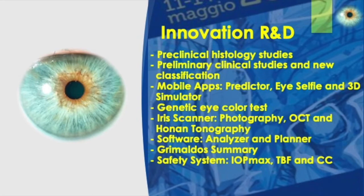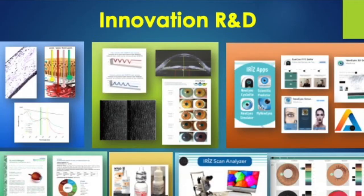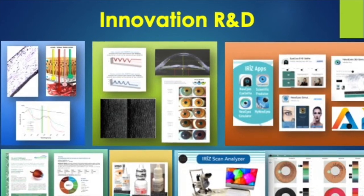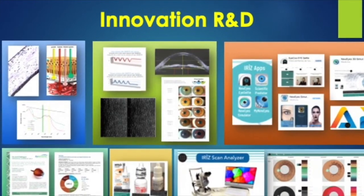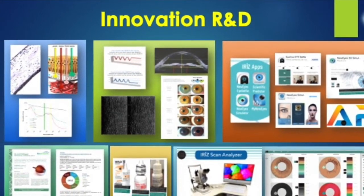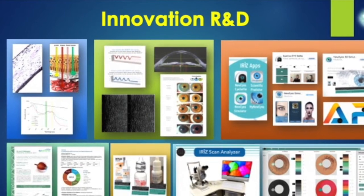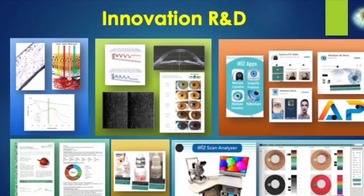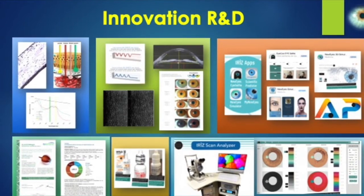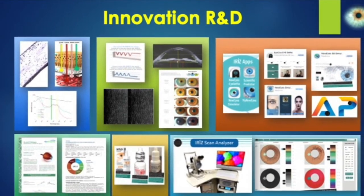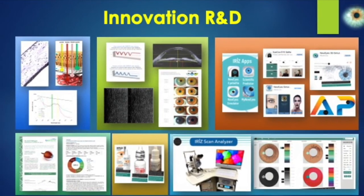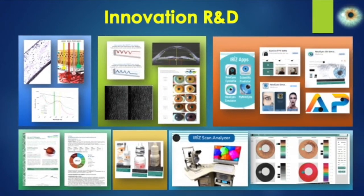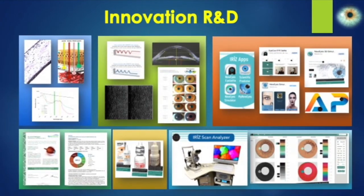On this slide I summarize all the progress made. Up to the left: preliminary studies, followed by clinical and classification, mobile applications and specific software, genetic tests for glaucoma and eye color, and eye drops. Bottom right, the iris scanner, and in the corner an example of the summary.